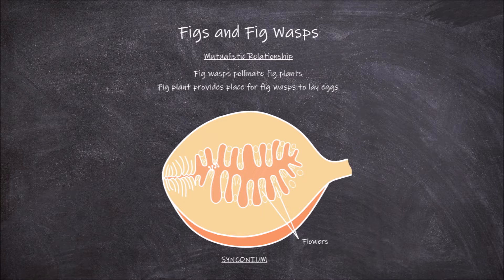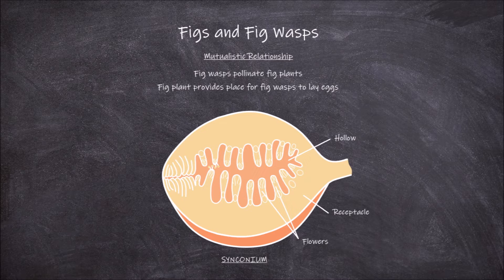It is also an accessory fruit, as some of the tissues of the fruit are made from tissues other than that from just the ovaries of the flower. The fruit consists of an enlarged and fleshy receptacle that is hollow on the inside. This receptacle is part of the fruit not made from the flower ovaries, and is instead made from a modified fleshy stem. The inside of this receptacle is lined by the small flowers of the fig plant.